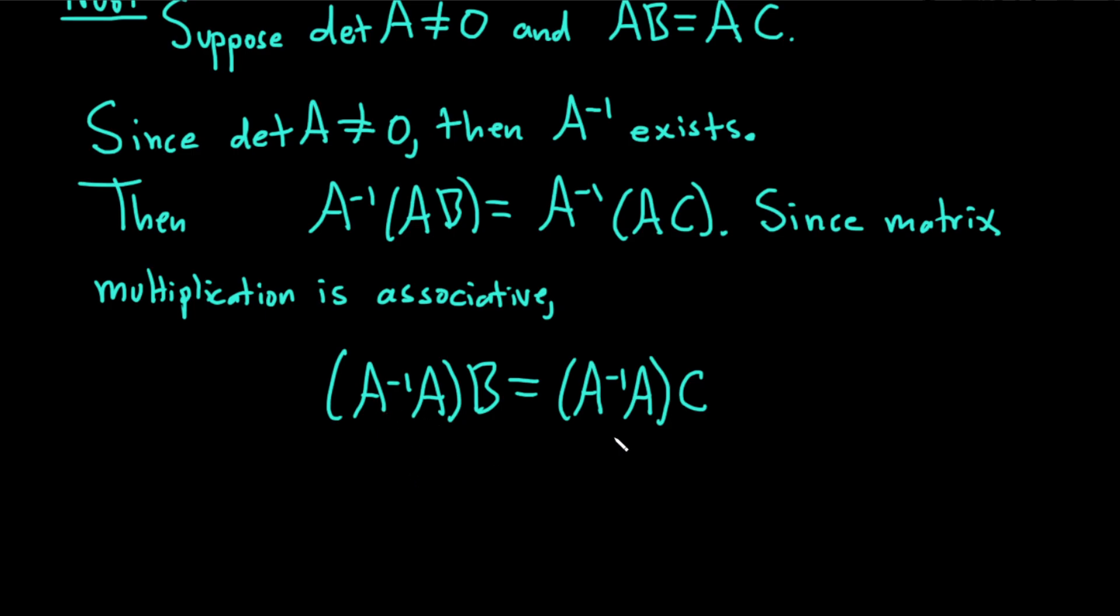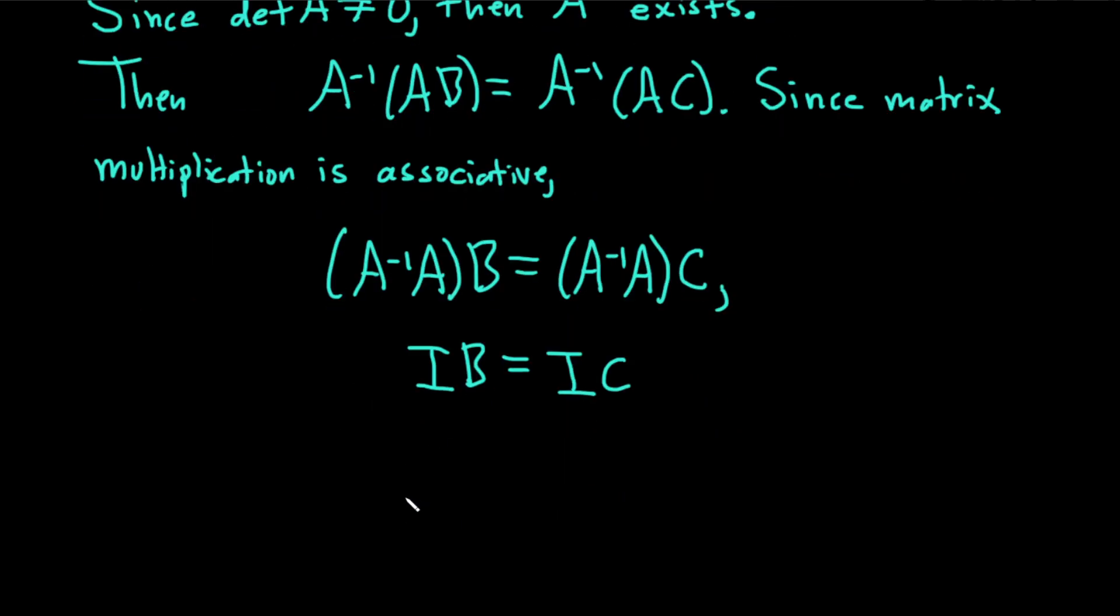And A inverse A is equal to the identity. Okay, so I'm just going to put a comma just right below it. So IB, this is pretty clear. And this is IC. It's just because A times A inverse is the identity. And because it's the identity, if you take any matrix and you multiply it by the identity, you're just going to get back your matrix.